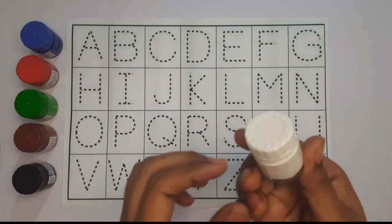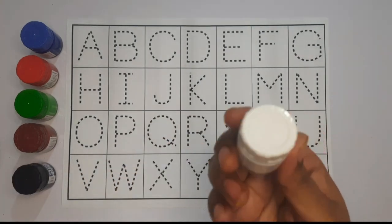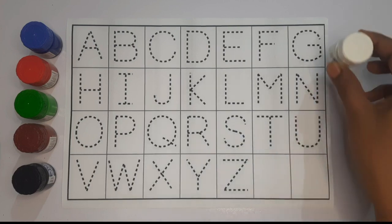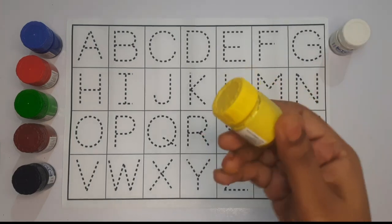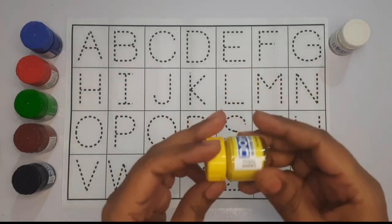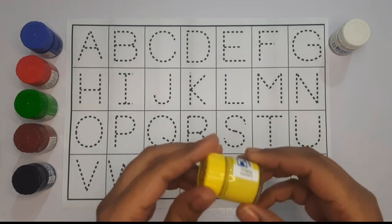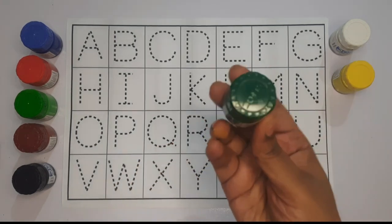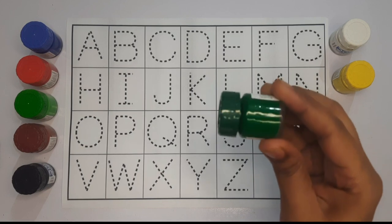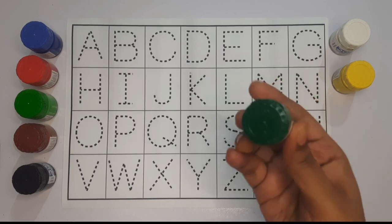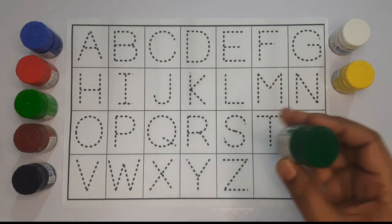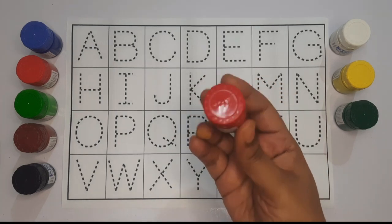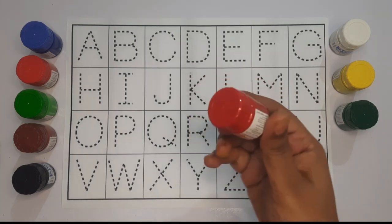This is white color. This is yellow color. This is dark green color. And this is red color.